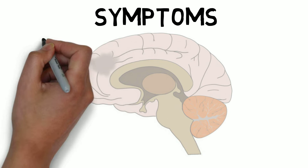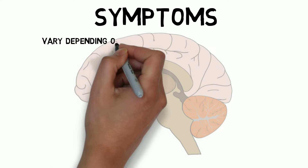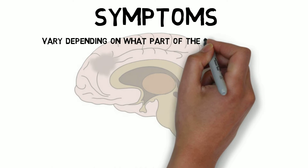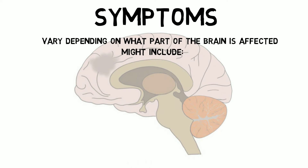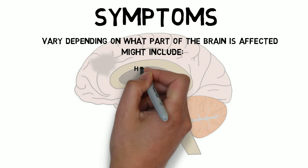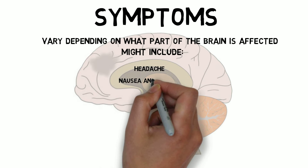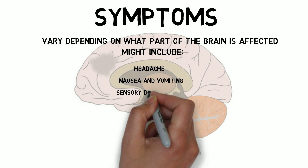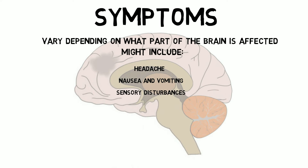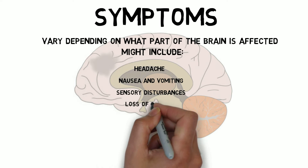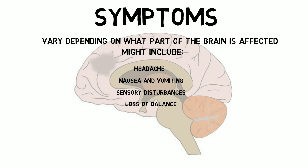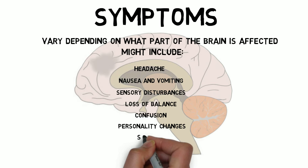The symptoms of brain tumors vary depending on what part of the brain is impacted, and thus from case to case. But some common symptoms include headache, nausea and vomiting, sensory disturbances like blurred vision, loss of balance, confusion, changes in personality, and seizures.